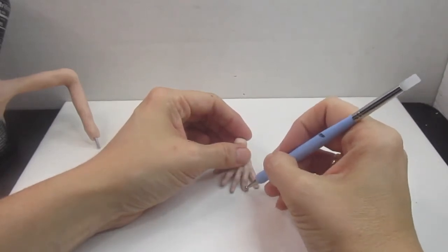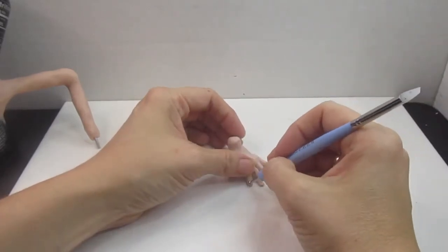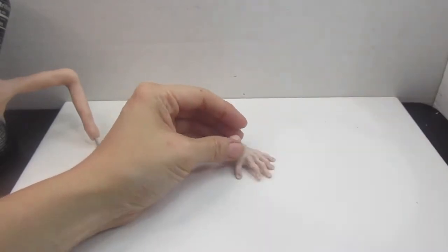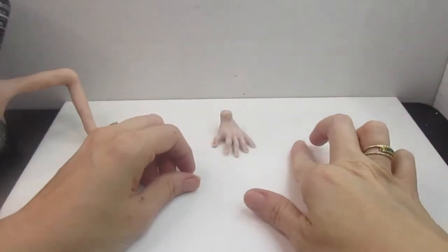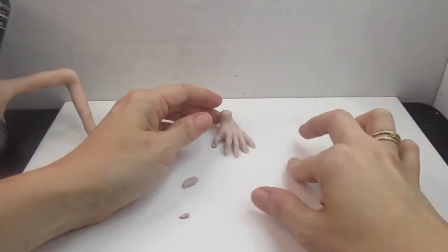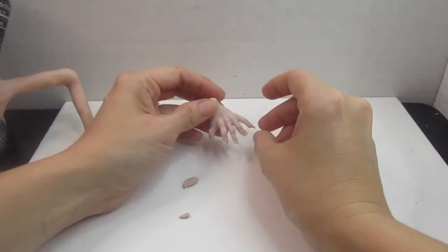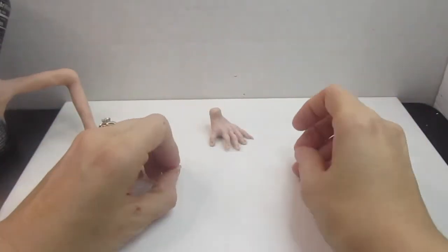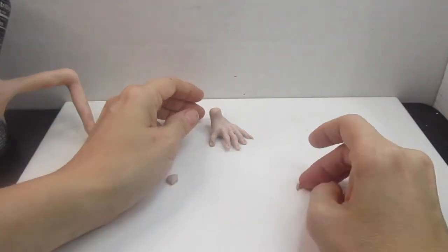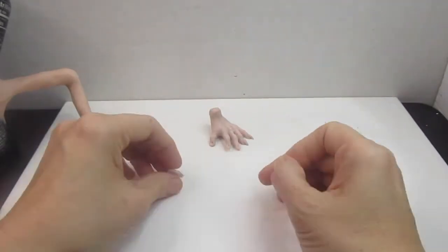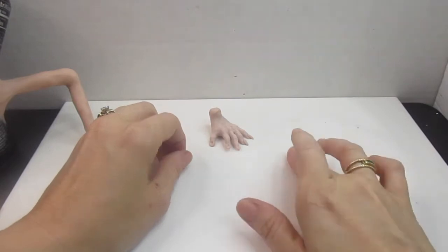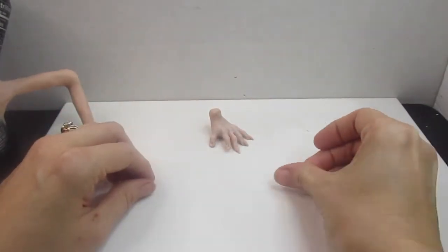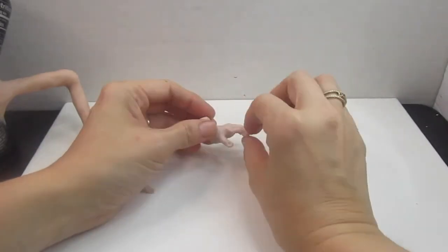Now I'm going to take a tiny little ball stylus and put some indentions in the fingertips of his hand to be able to place in some fingernails. I'm making kind of pointy claw-like fingernails, but they're not claws. They're just long, pointy fingernails. And all it is is just making kind of a tiny little teardrop out of the clay and adding that to the indentions that I made with the ball stylus at the end of the fingers.